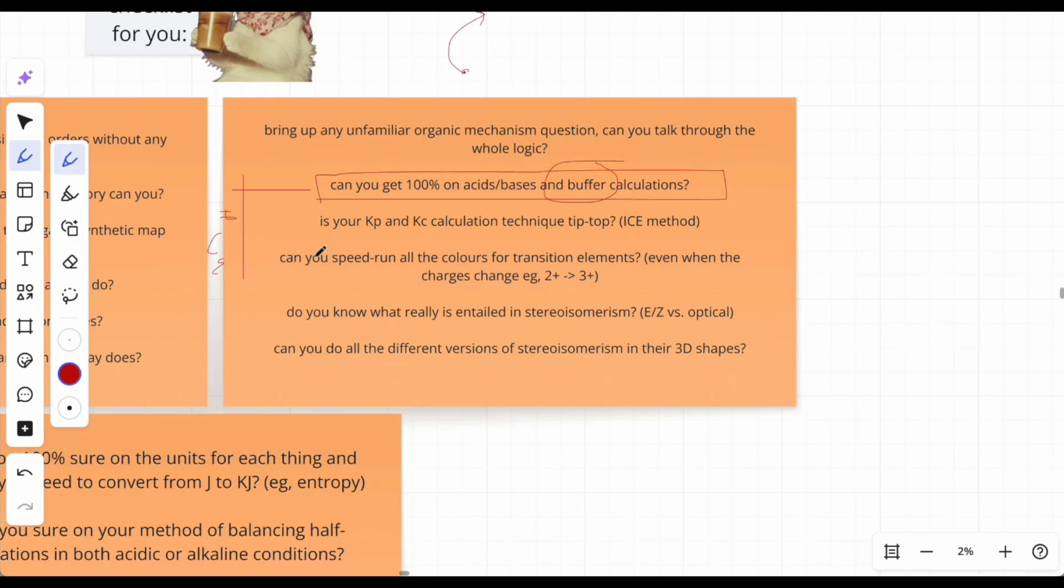Can you speed run all the colors for transition elements even when charges change, like Fe2+ to Fe3+? You need to know the colors. It's so difficult without them - some questions might be impossible because there's no way you can derive it. By exam time, how do you learn the colors? Make a song. My friend and I used My Little Pony or Tracy Beaker theme songs as the base to learn transition element colors. You have to do what you have to do. Make them interactive - learn through a song, rhyme, memory palaces, or explain to a friend imagining each element as characters in a story.